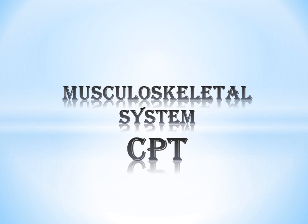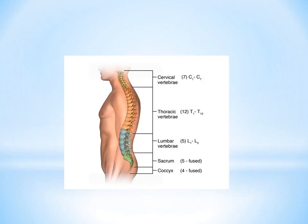I will be discussing two topics in this video. Before going to the two topics, I need all of you to understand what the vertebral column and vertebrae are. The picture shown here is the human vertebral column. The vertebral column is divided into cervical vertebrae, thoracic vertebrae, lumbar vertebrae, sacrum, and coccyx.